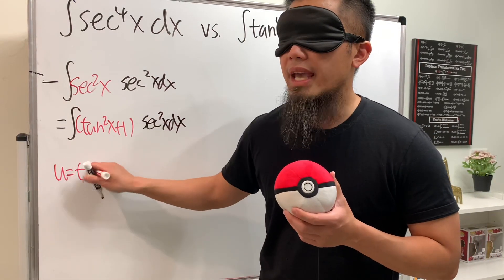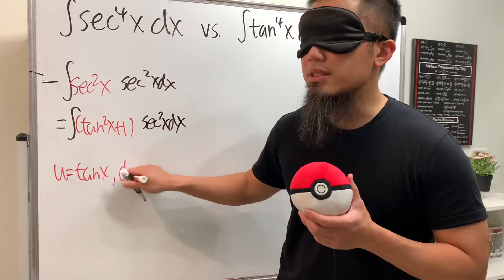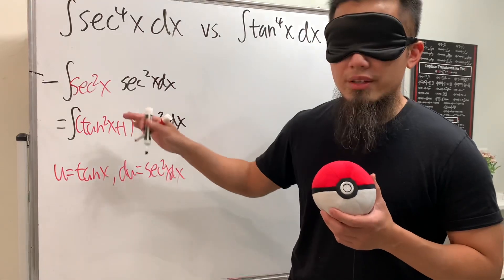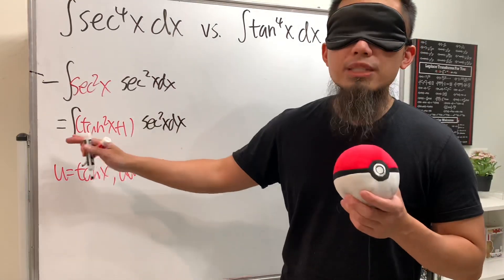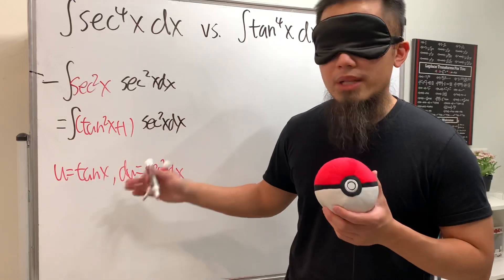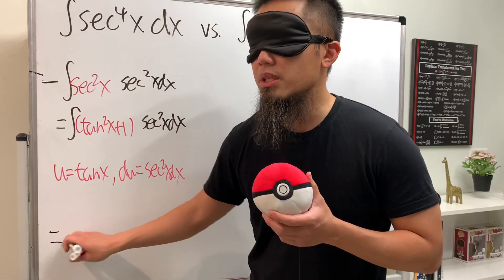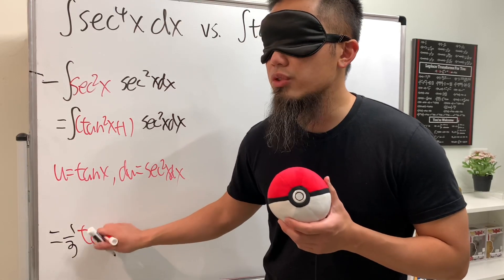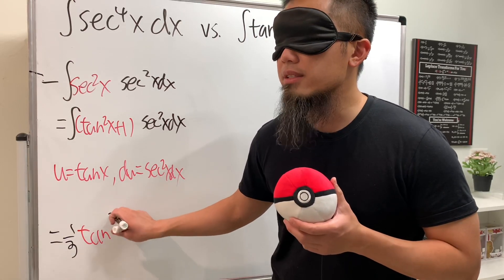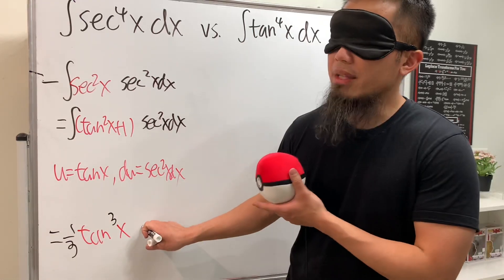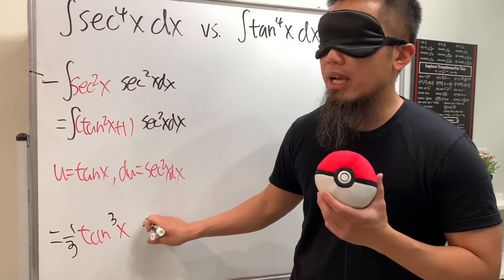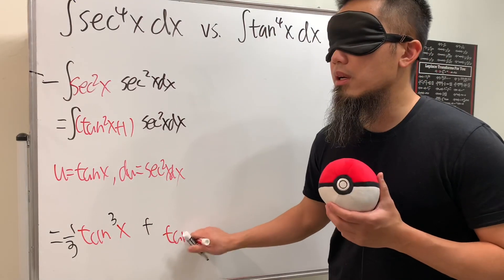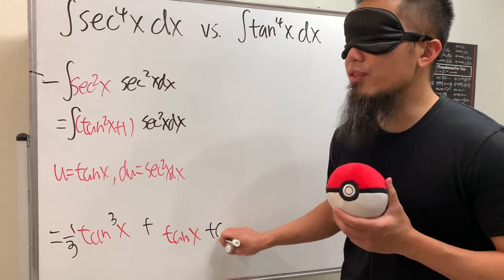This is nice because we can do a u-substitution: u equals tangent x, and du equals secant squared x dx. Now we integrate in the u world — we just integrate u squared plus 1 du. The result is one-third u cubed plus u, which back in x is one-third tangent cubed x plus tangent x, plus C.